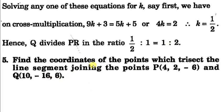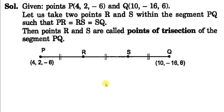Next question: find the coordinates of points which trisect the line segment joining the points. Trisect means dividing it into three equal parts. We take two points R and S on the line segment PQ which divide it into three equal parts.